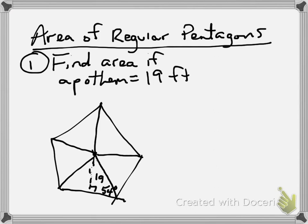The first type of problem is find the area if the apothem is 19 feet. The apothem goes straight down from the center to the side and it's always perpendicular, making a right angle. So 19 is that side right there.